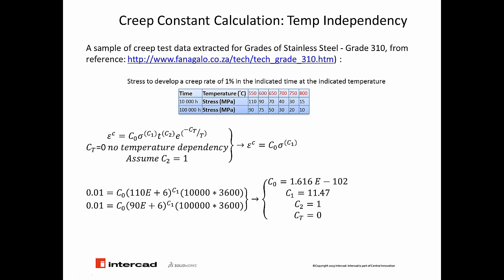To make the calculation temperature-independent means we ignore temperature variation, so CT equals zero. Therefore the equation just considers C0, C1, and C2. Since we have only two test data points at 10,000 hours and 100,000 hours, we can calculate two unknowns. For that reason, we assume C2 equals 1, modifying the equation to: epsilon equals C0 times stress to the power of C1. We have two unknowns C0 and C1. With a strain rate of 0.01, 110 MPa at 10,000 hours and 90 MPa at 100,000 hours, we solve two equations with two unknowns, yielding C0 and C1 equals 11.47, with C2 assumed equal to 1 and no temperature dependency.